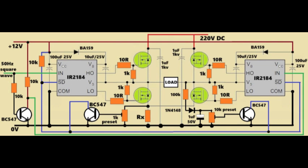Each IR2184 drives one half-bridge, so two of them together make a full bridge. In the H-bridge, we see four MOSFETs, shown in green color, forming the main H-bridge power stage.